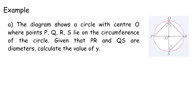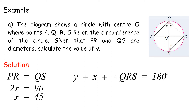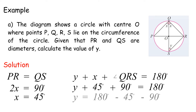Example A: The diagram shows a circle with center O, where points P, Q, R, S lie on the circumference. Given that PR and QS are diameters, calculate the value of Y. 2X equals 90 degrees, so X equals 45 degrees. Y plus X plus Angle QRS equals 180 degrees. Y plus 45 degrees plus 90 degrees equals 180 degrees. Y equals 180 minus 45 minus 90, equals 45 degrees.